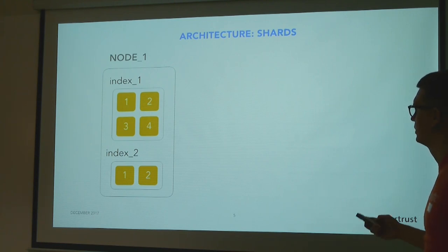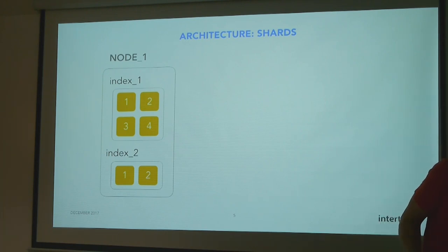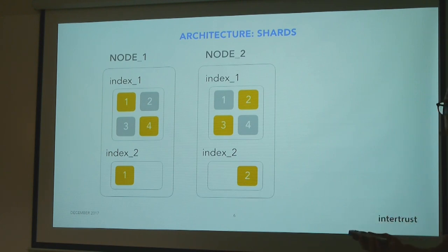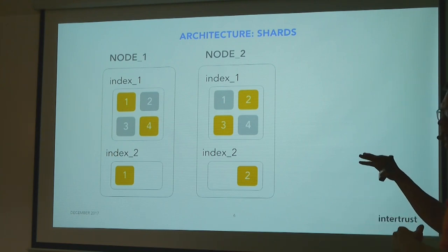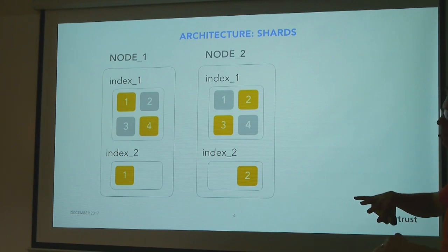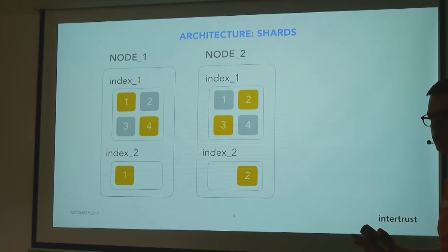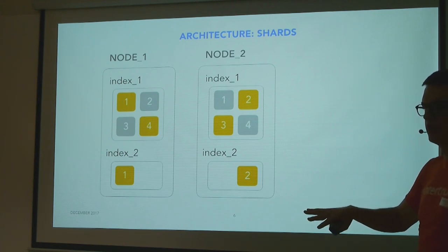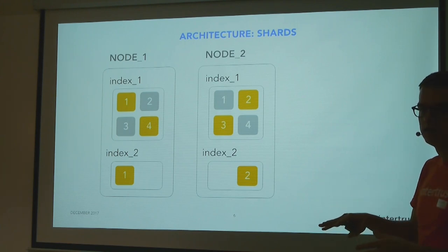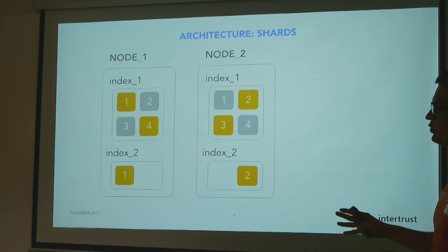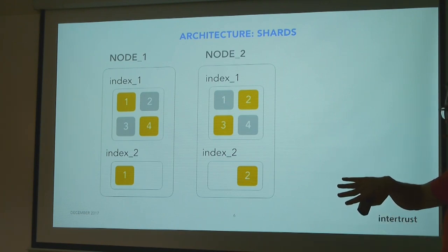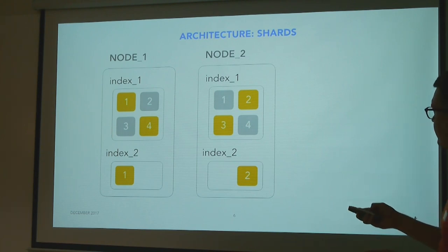By default every index has five shards, but that's configurable. When you add a second node to the cluster, indexes are completely separate and independent — you can have any number of indexes with different configurations. If you have data that is logically separate or has very different mappings, you should put them in separate indexes.